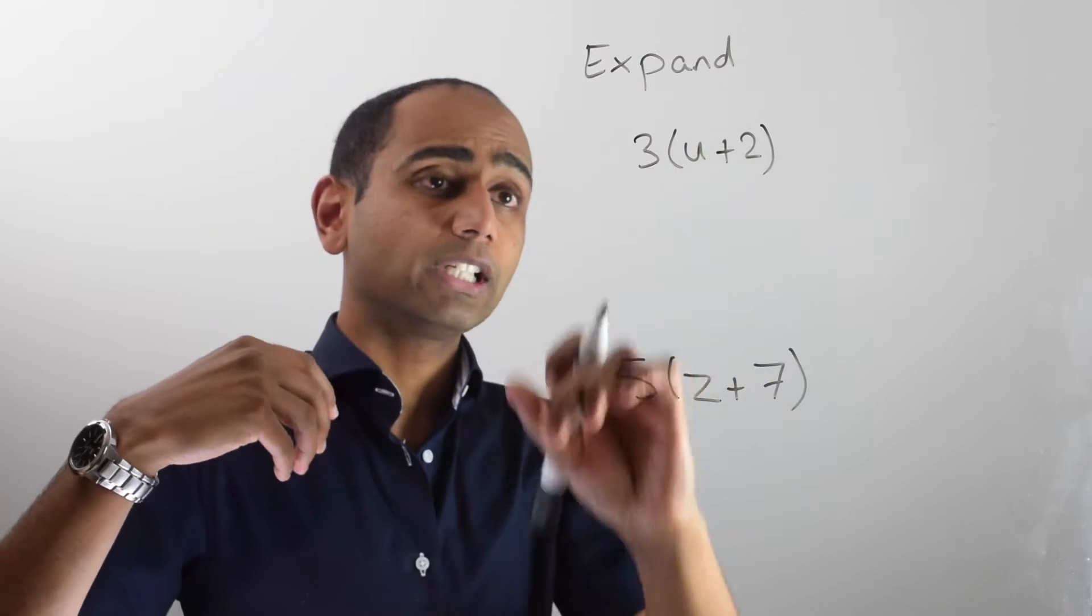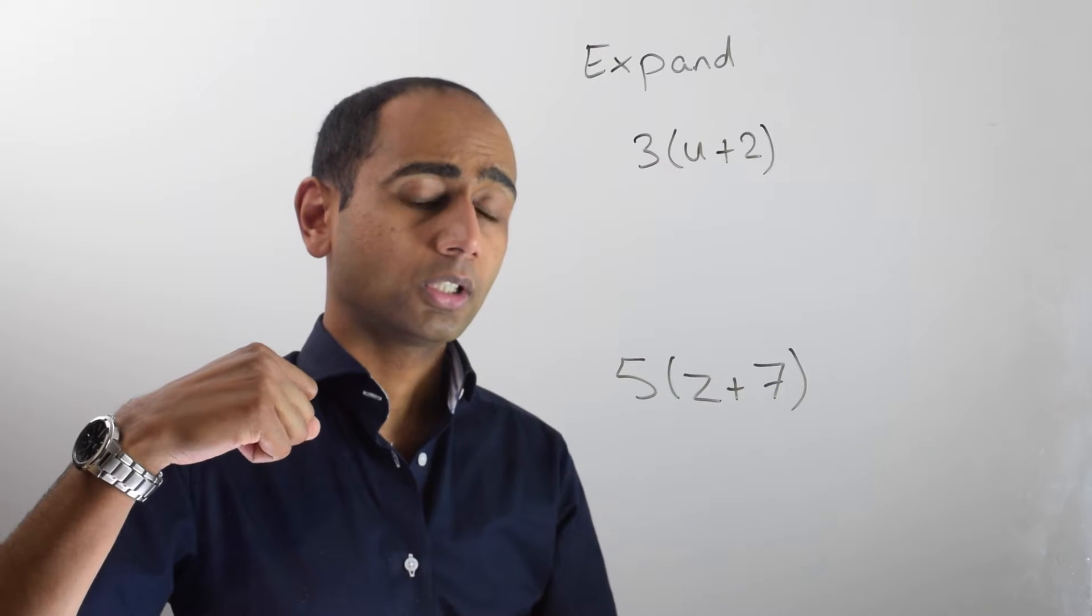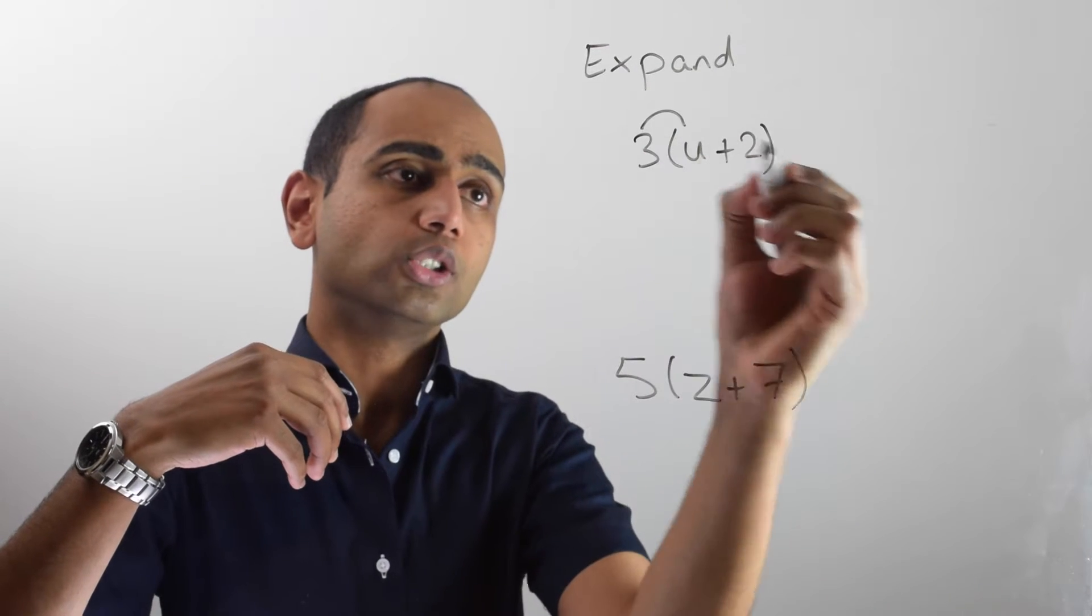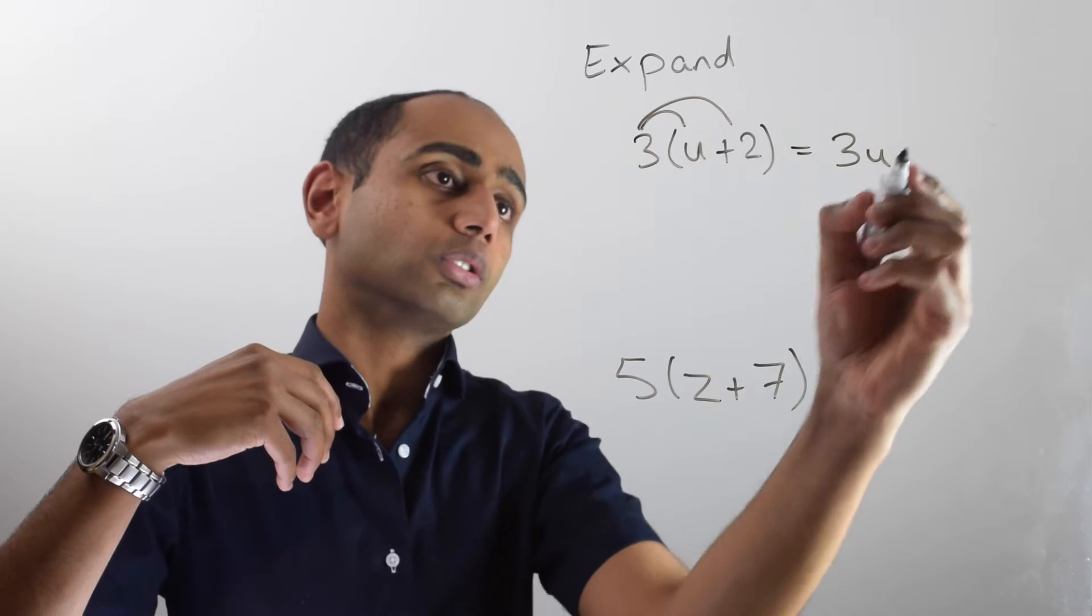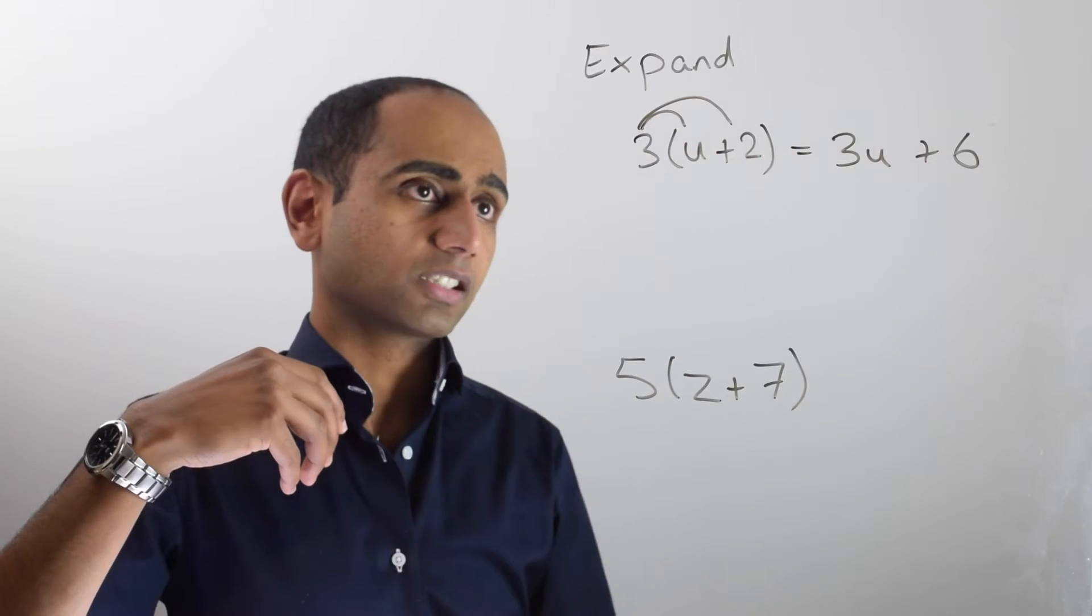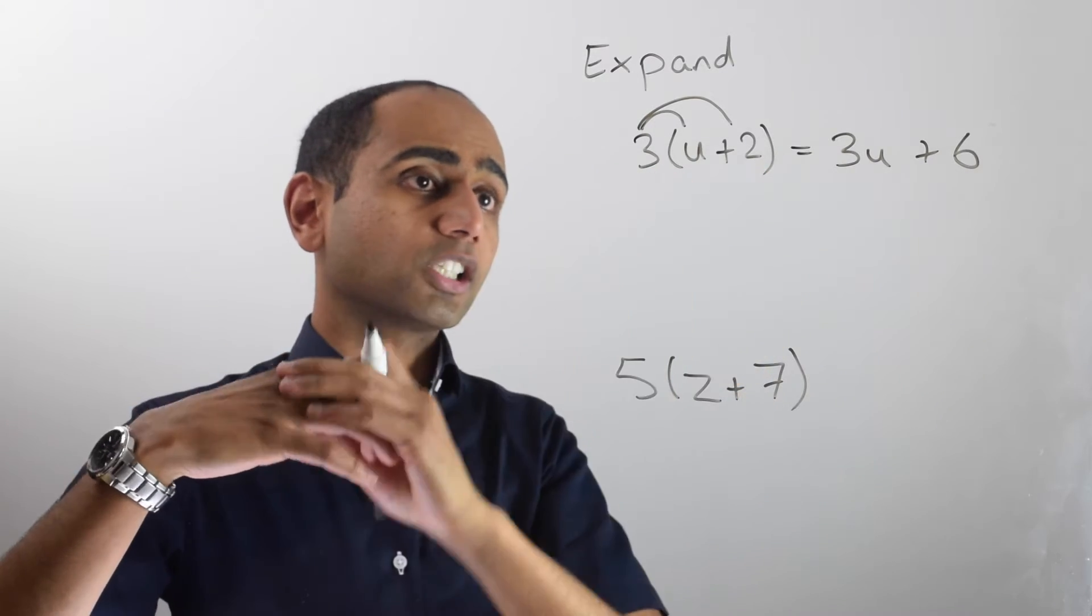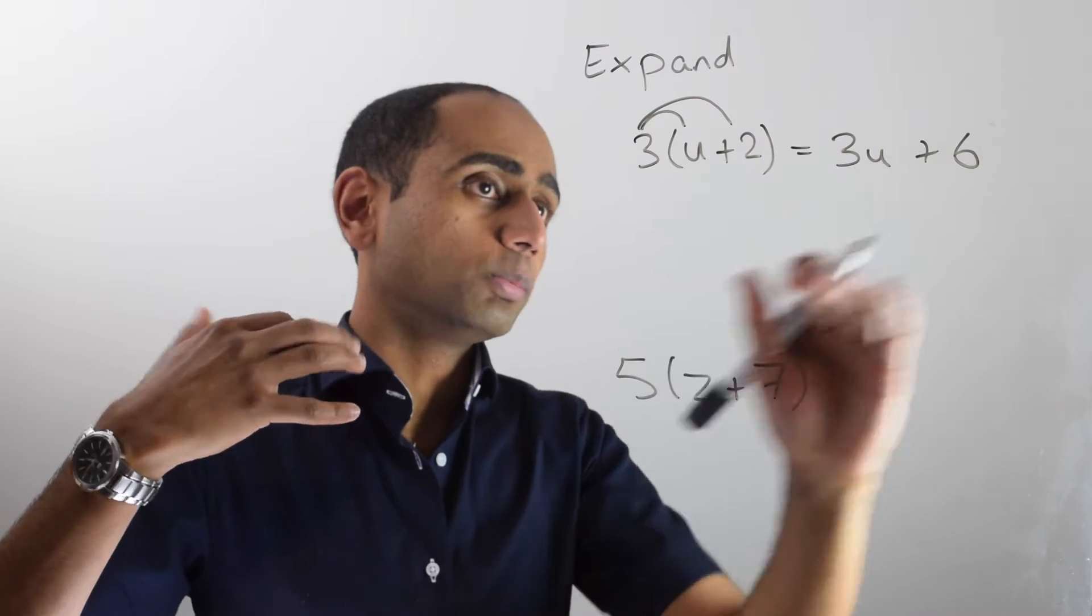In this example I've got three lots of (u + 2). So that's going to give me three lots of u, which is 3u, plus three lots of 2. And that's 6. So 3(u + 2) is 3u + 6.